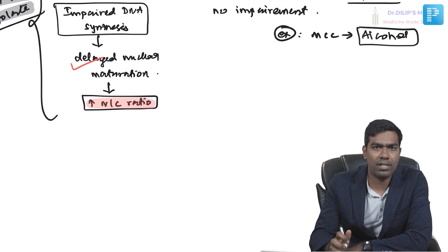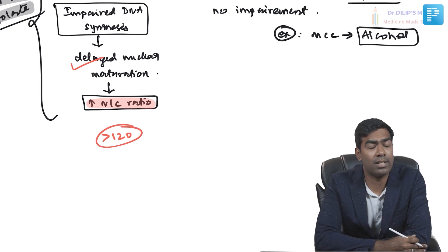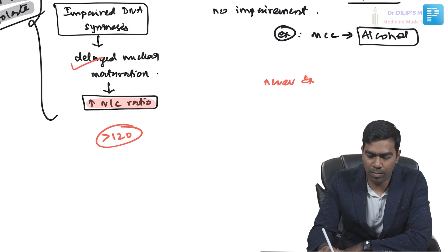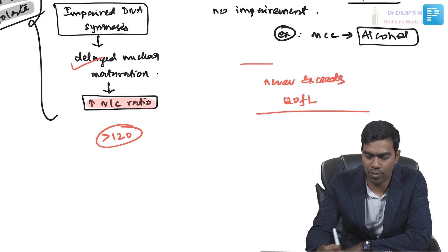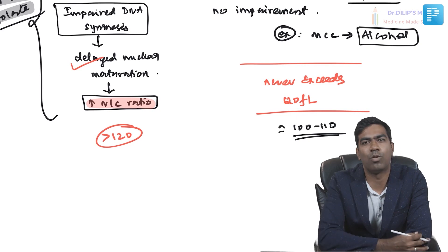One more difference: in megaloblastic macrocytosis, the MCV, if untreated, can exceed 120 femtoliters. But in non-megaloblastic macrocytosis, the MCV never exceeds 120 femtoliters — it usually ranges approximately 100 to 110 femtoliters and nothing more. So in megaloblastic macrocytosis your MCV can exceed 120 fL, whereas in non-megaloblastic it will not.